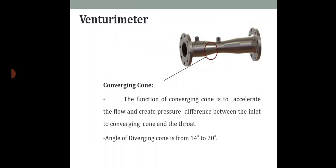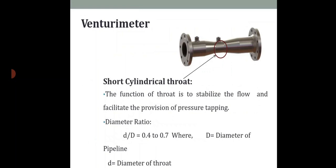The purpose of the converging zone is to accelerate the flow and create a pressure difference between the inlet and the throat. The angle of the diverging cone ranges from 14 to 20 degrees. The throat is a short cylindrical section used for stabilizing the flow and facilitating pressure tapping. The diameter ratio d/D should equal 0.4 to 0.7, where D is the pipe diameter and d is the throat diameter.